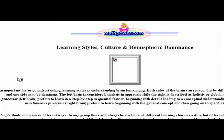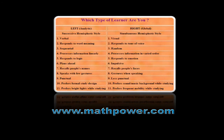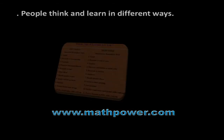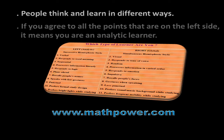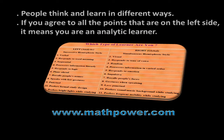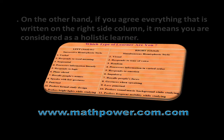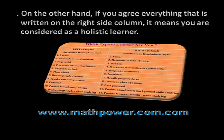Click on the link titled "Identify Your Learning Style". You will then get access to an interesting write-up. This content makes you aware of the type of learner that you are. People think and learn in different ways. If you agree to all the points on the left side, it means you are an analytic learner. On the other hand, if you agree with everything on the right side column, it means you are considered a holistic learner.